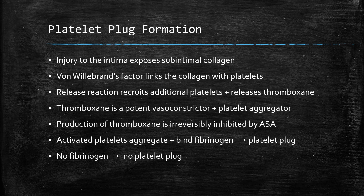The production of thromboxane is irreversibly inhibited by aspirin. Activated platelets are able to aggregate and then acquire the ability to bind fibrinogen, which is what makes the platelet plug. But this is not yet a stable platelet plug — that will require fibrinogen being converted to fibrin and then cross-linked. If there's no fibrinogen present, there will be no platelet plug.